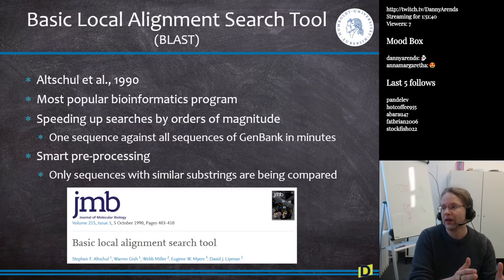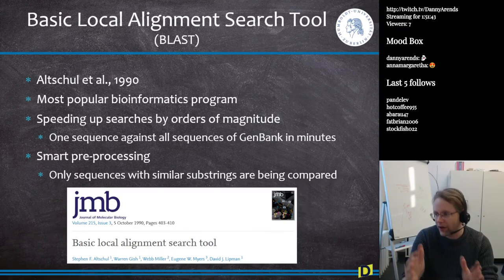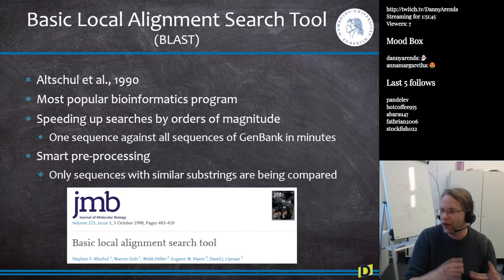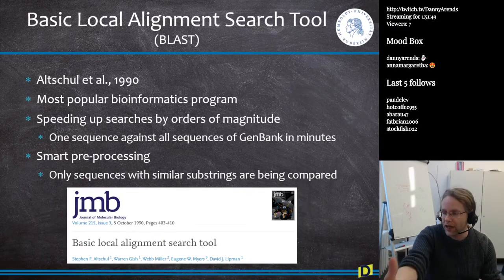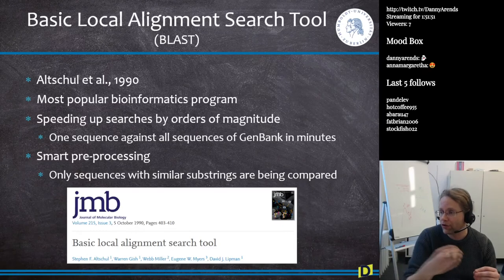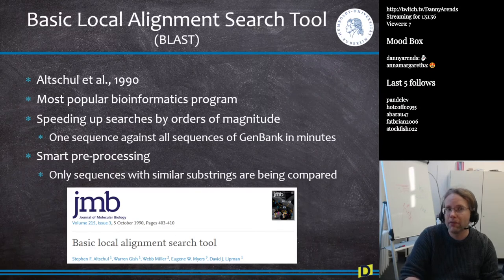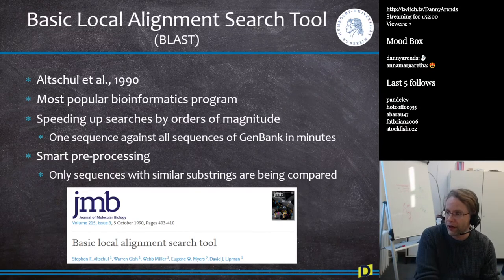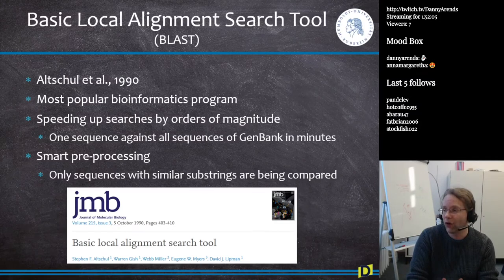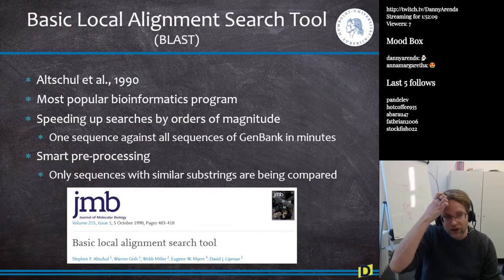BLAST chops your query sequence into words — e.g., the first five base pairs, then the next five, etc. — and only compares it to database sequences that have a match with one of those substrings. If there's no match between any substring of your sequence and a database entry, that comparison is discarded, quickly excluding many possible alignments.